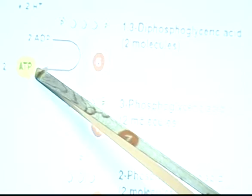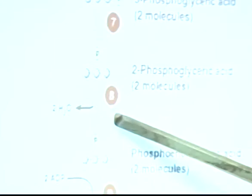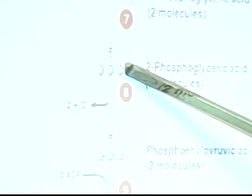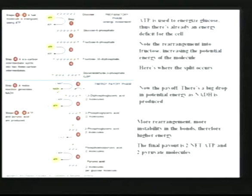We then do more rearrangements in steps seven and eight. There's a dehydration which makes the molecule even more unstable, and it's very easy now to pull that phosphate off to produce two more ATPs — exactly what the cell does. The final payout in all of these reactions is two net ATPs, two pyruvates, and two NADHs.